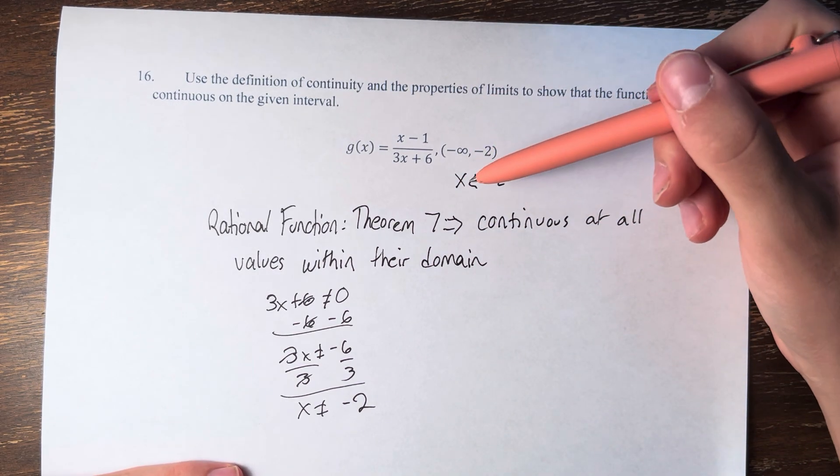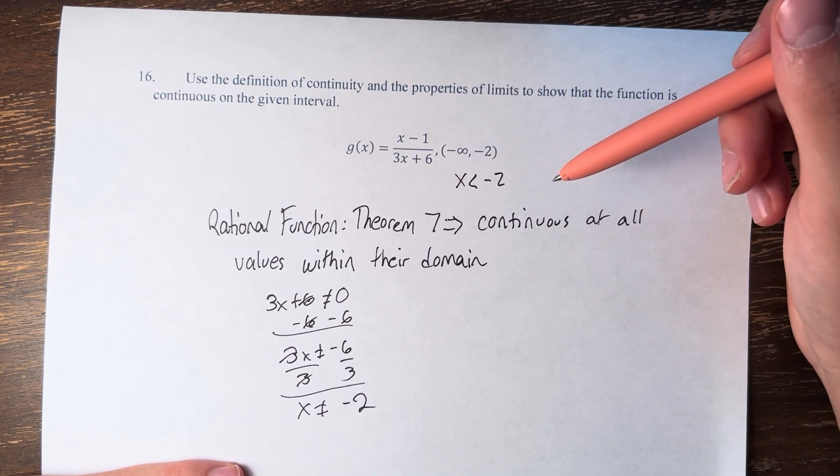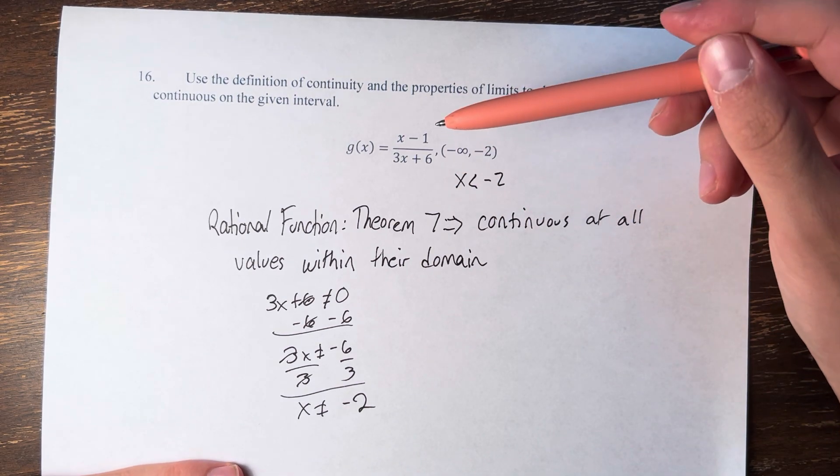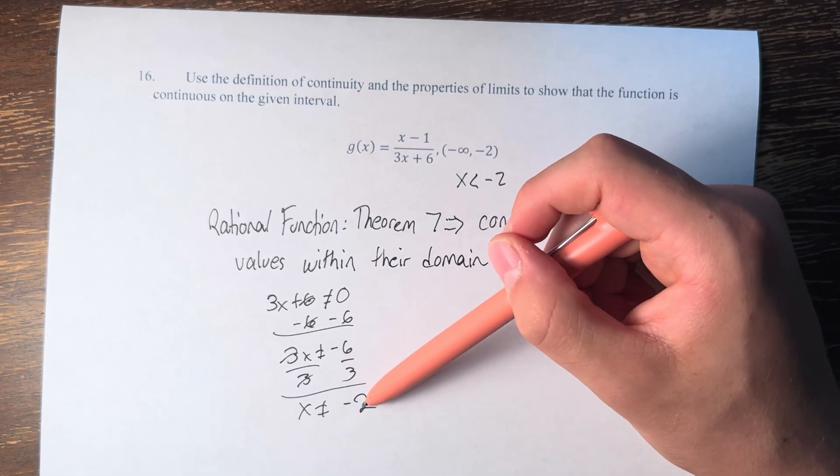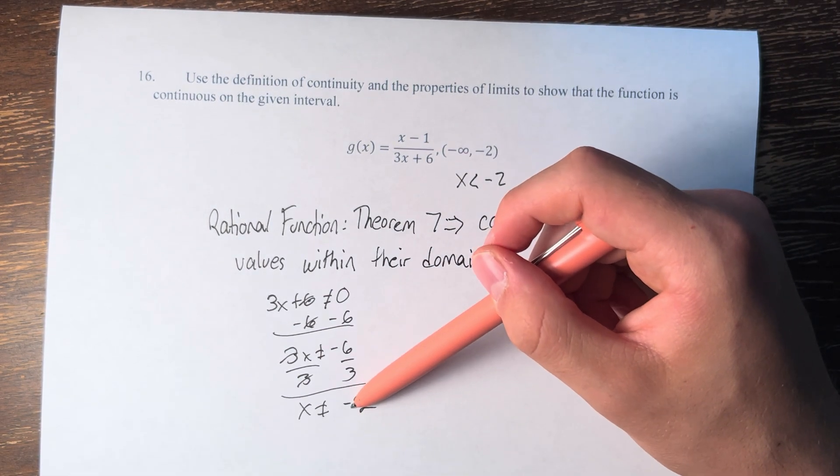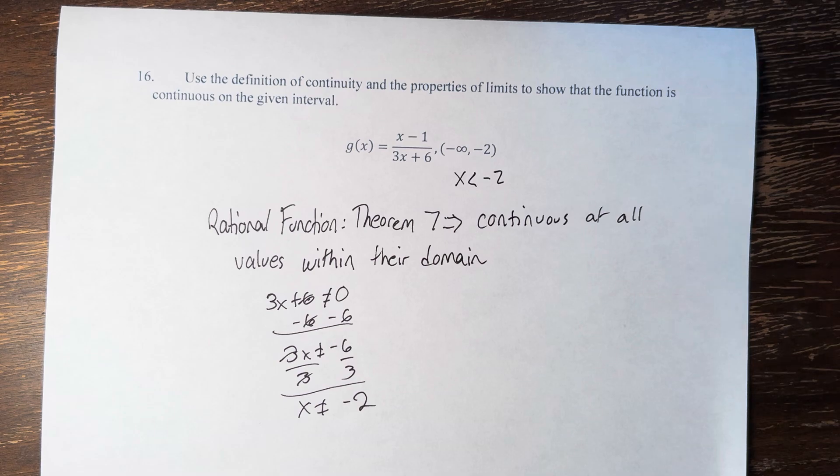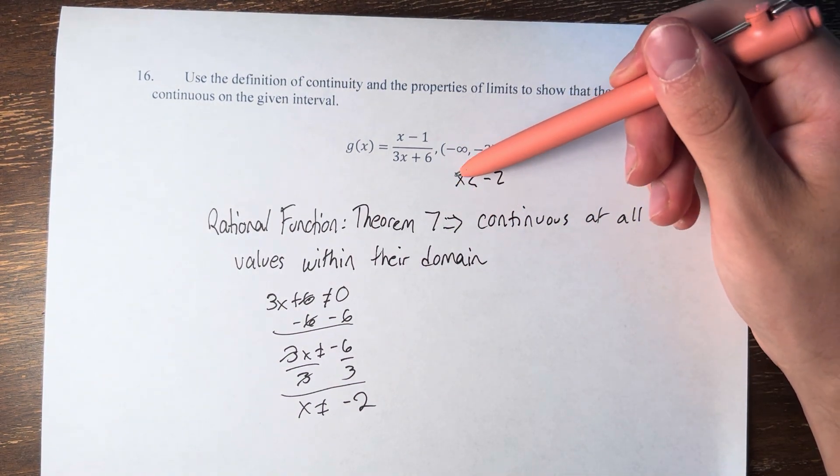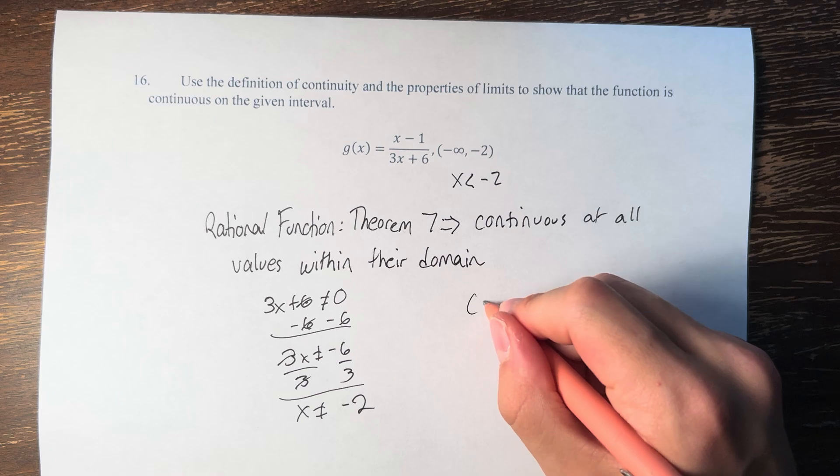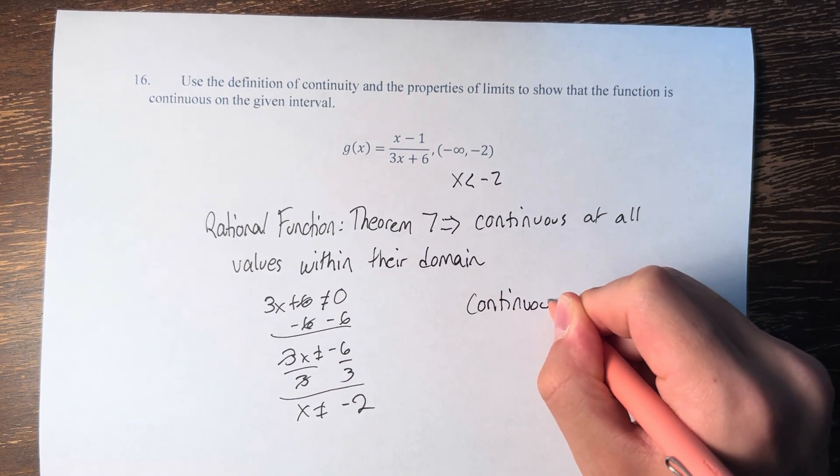Therefore, if x is only less than negative 2, right? We're looking at all points less than negative 2. Since we only have this domain restriction at negative 2 itself, all other values, which means all values less than it, and all values greater than it, but we only care about less than it, all values less than negative 2, the function is continuous.